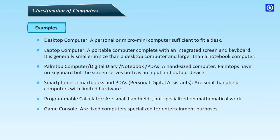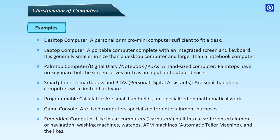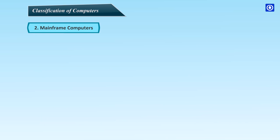Game Consoles are fixed computers specialized for entertainment purposes. Embedded Computers, like in-car computers, are built into a car for entertainment or navigation, as well as washing machines, watches, ATM machines, automatic teller machines, and the likes.